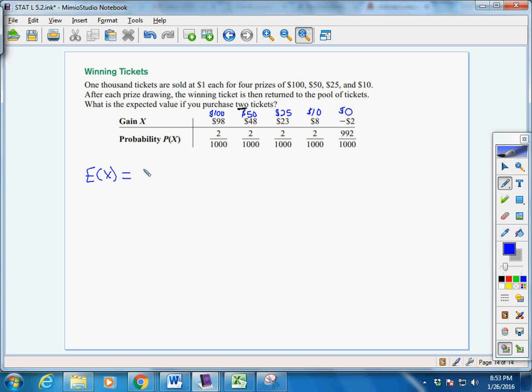So remember, the first way we did it was we could go 98 times our probability, 2 over 1,000, plus 48 times 2 out of 1,000, plus, and so on and so forth, all the way to the end.